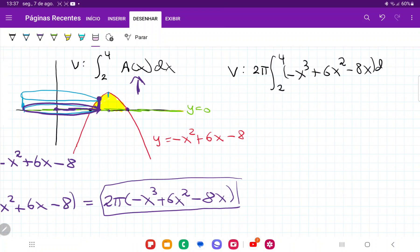So once I have this, let me just improve this. I'm just going to take the antiderivative. So that's still 2 pi times minus x to the fourth over 4 plus 6x cubed over 3 minus 8x squared over 2 and all of this evaluated from 2 to 4.